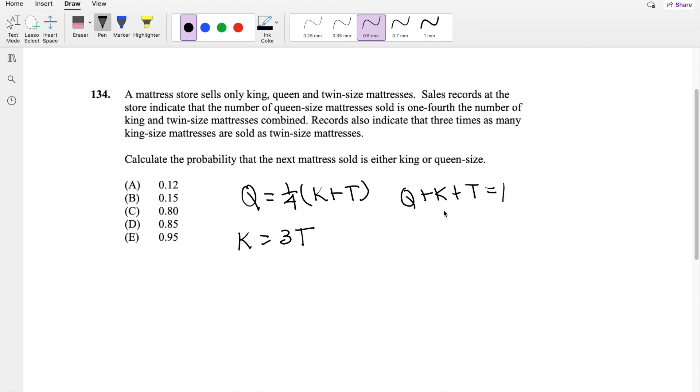So if we have this statement right here, I'm going to put everything in terms of twin, just because I think that's going to be the easiest. So then if I put the queen in terms of just twin variable, so this is going to be equal to Q equals one-fourth king plus one-fourth of twin. And because I want to try to get rid of this K here, I'm going to plug in this sucker right here. Q is equal to one-fourth three T plus one-fourth T. So queen in terms of just twin beds is equal to three-fourths plus one-fourth, which is equal to just one T.